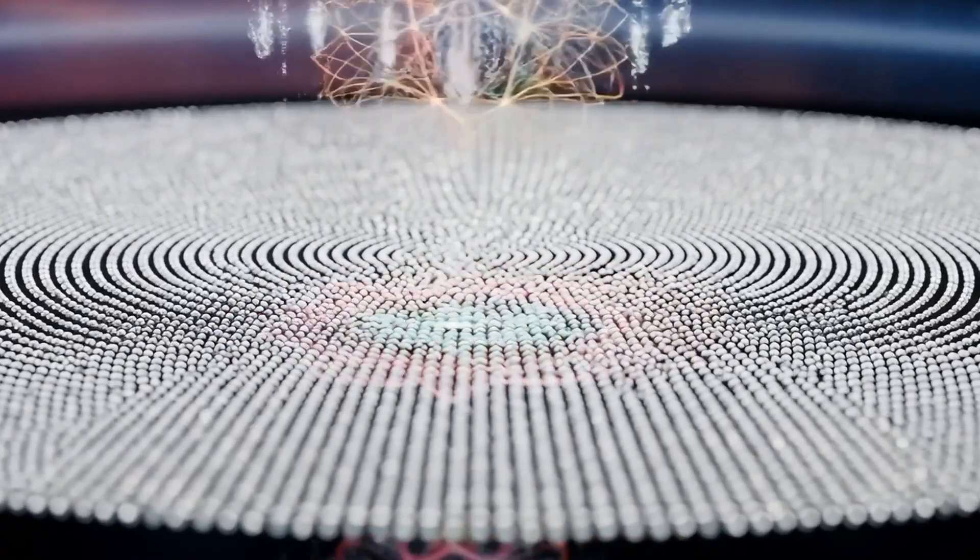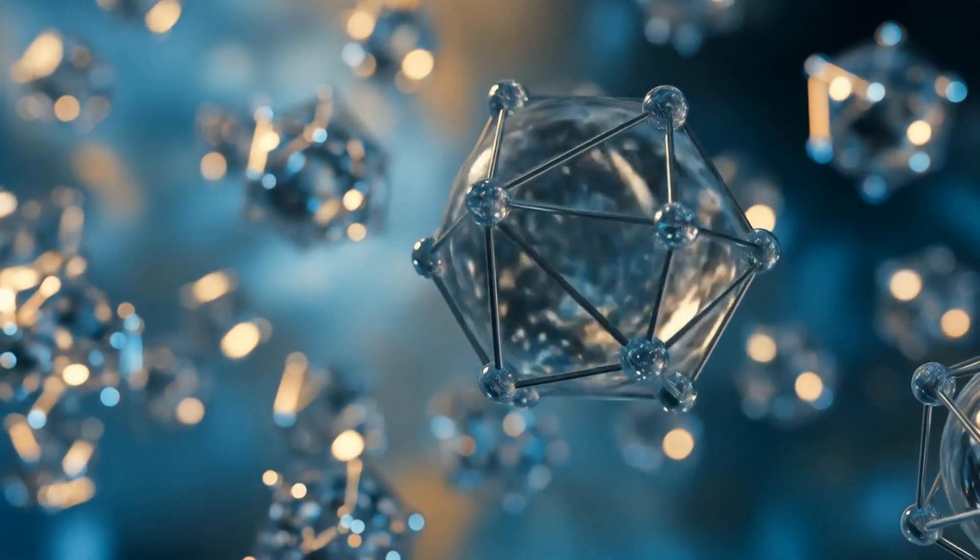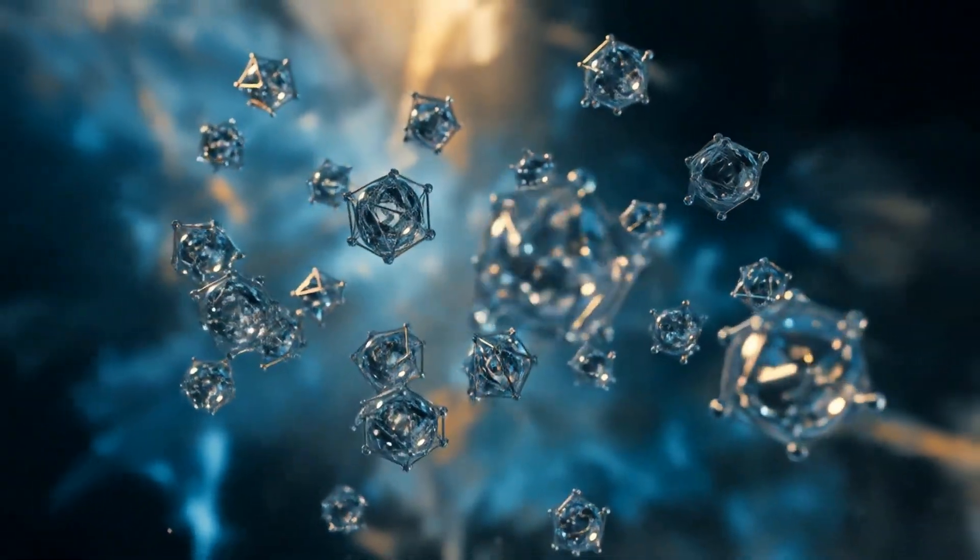You are made of light encoded with spin. That light spins with angular frequency and each spin angle encodes probability, geometry and identity.